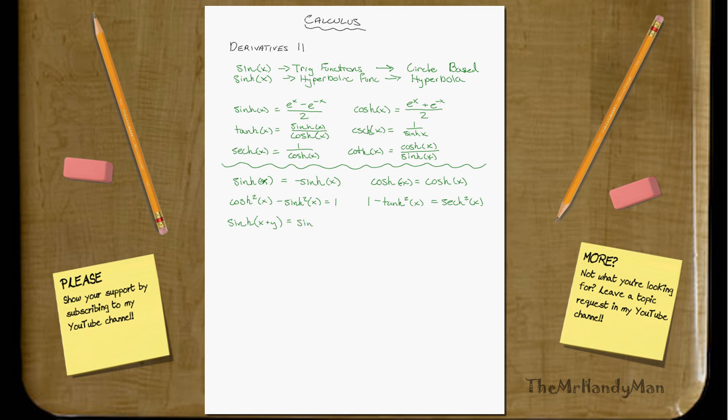sinh of x plus y equals sinh x cosh y plus cosh x sinh y. Notice, it's just a pattern. It goes sine x, cosine y, cosine x, sine y. Just a pattern.